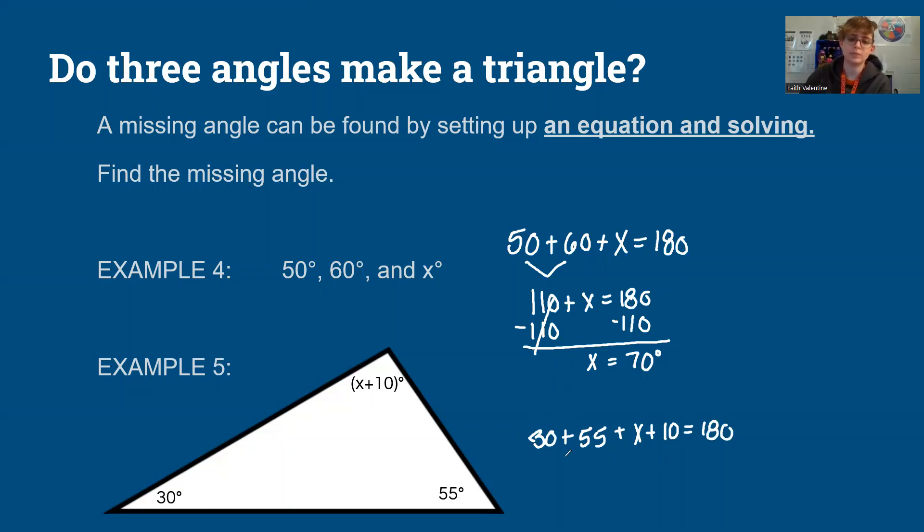So I'm going to combine all of my parts. 30 plus 55 is 85, plus 10 more is 95. I'm going to subtract my 95. I'm going to write my answer over here to the side. I did not give myself enough space.